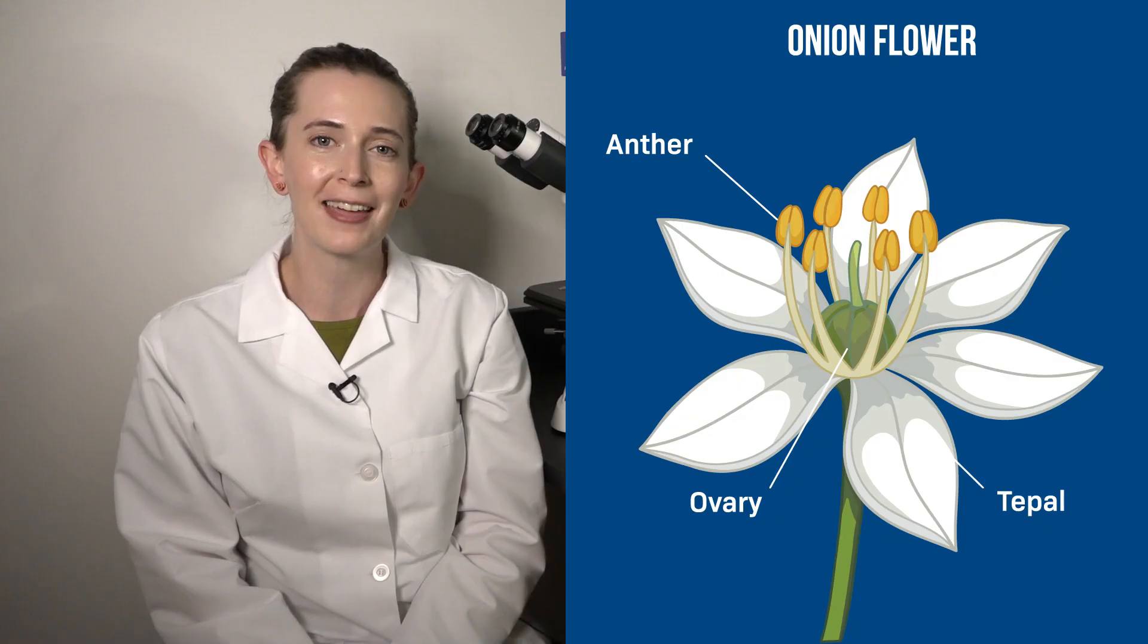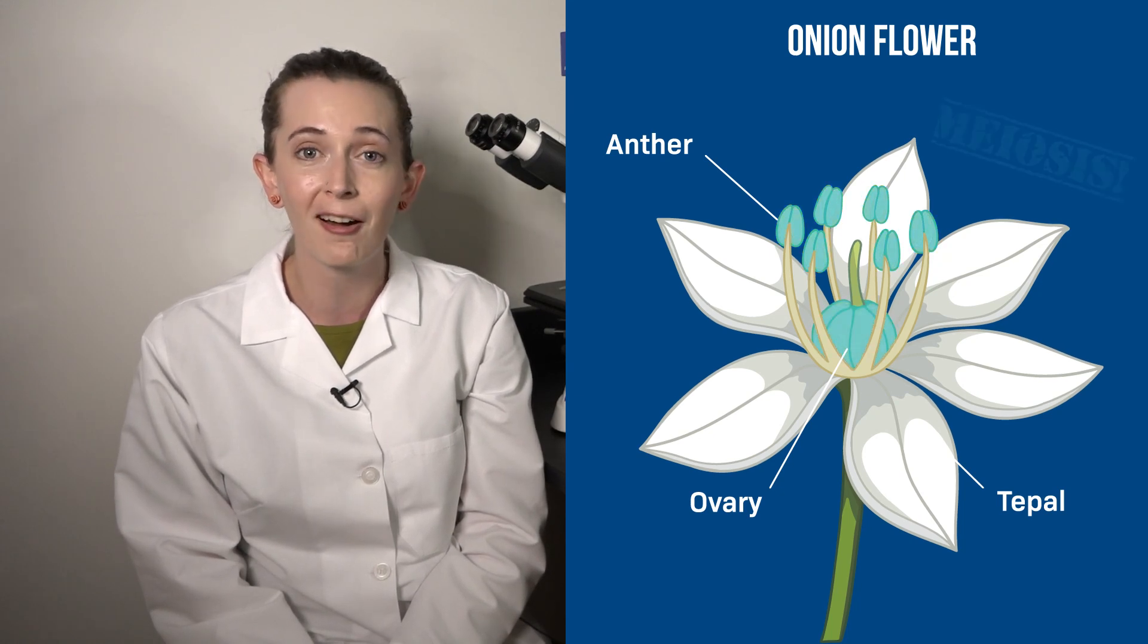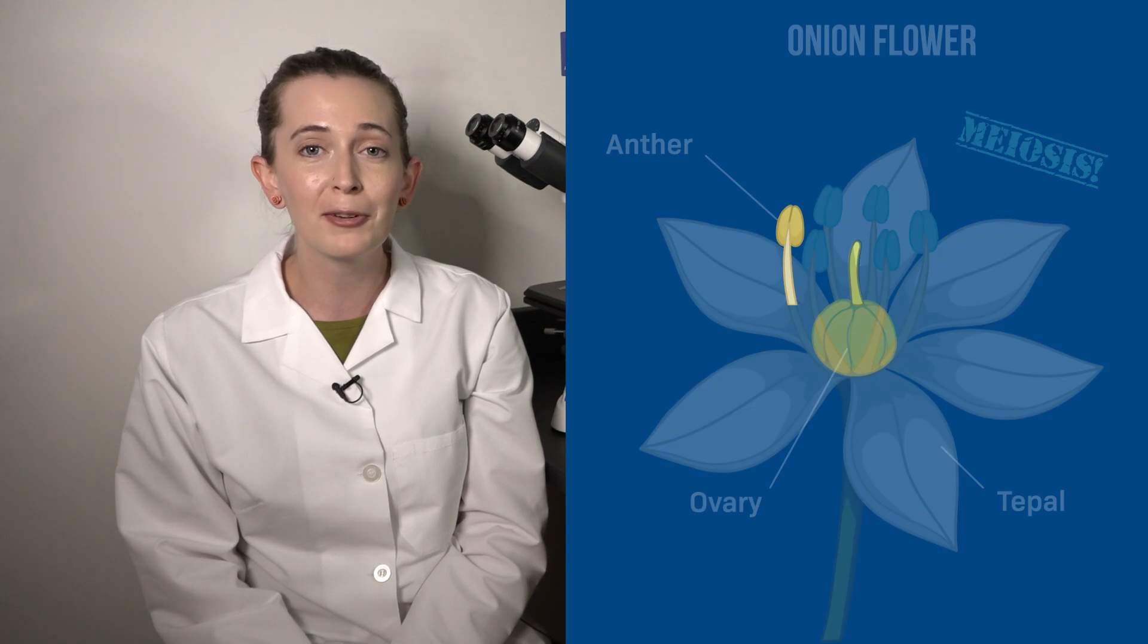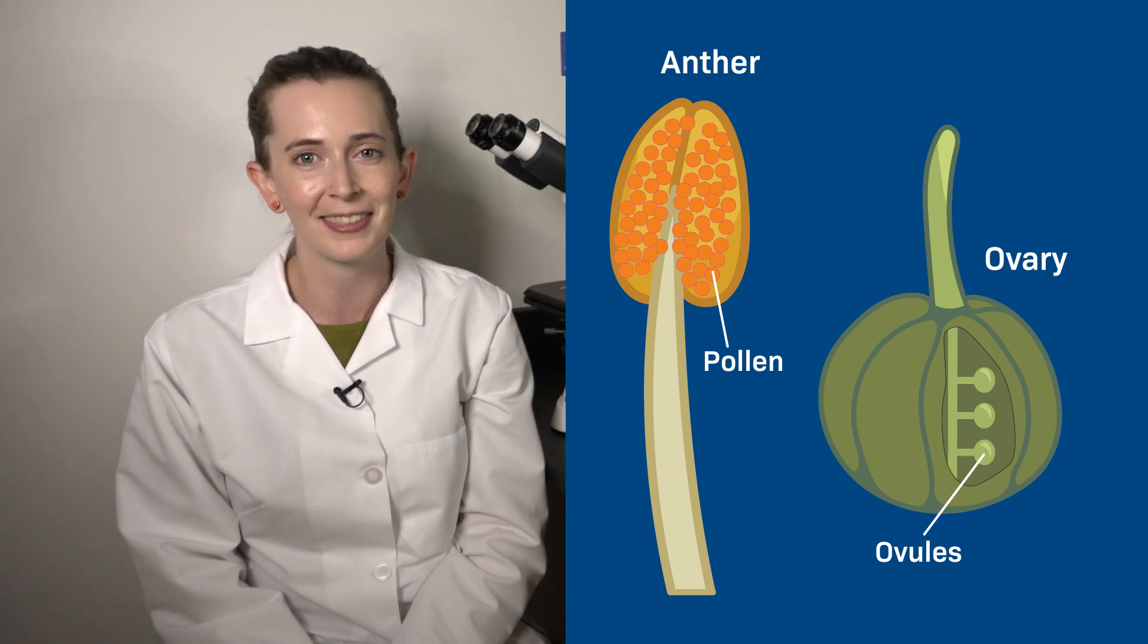Meiosis happens in flower anthers and ovaries to produce cells that will eventually become pollen and part of the ovules, respectively. But flowers make way more pollen than ovules, so we have a better chance of finding meiotic cells in the anthers.